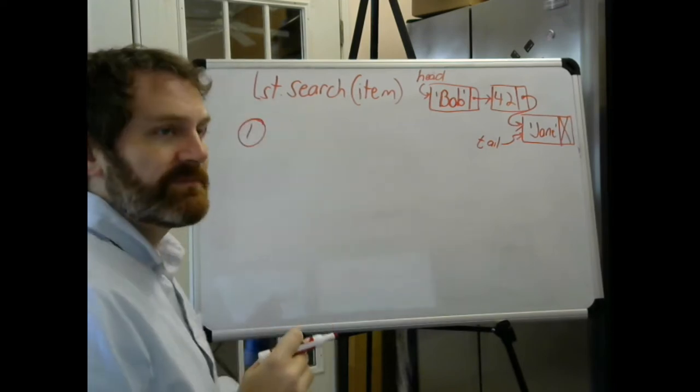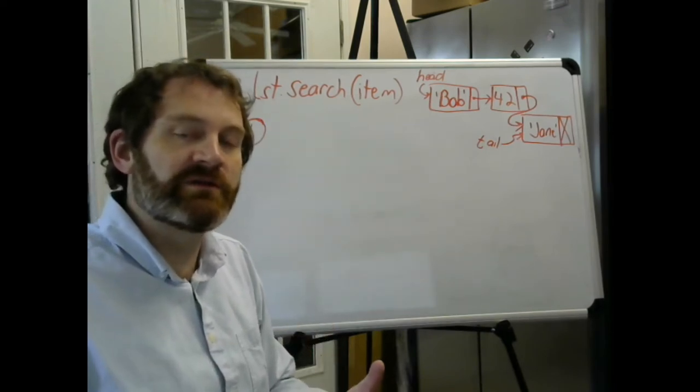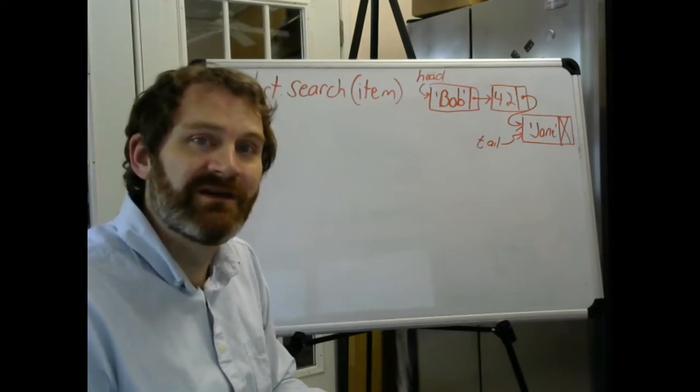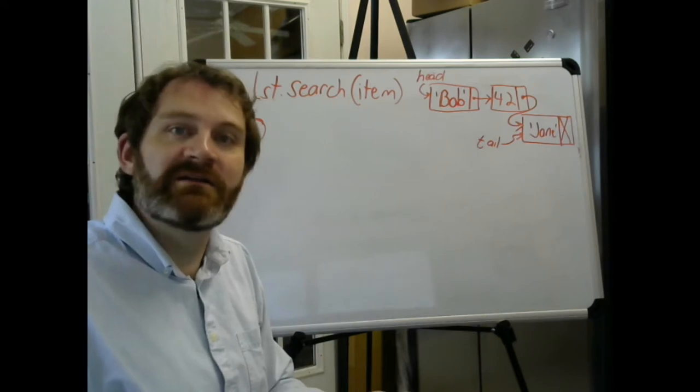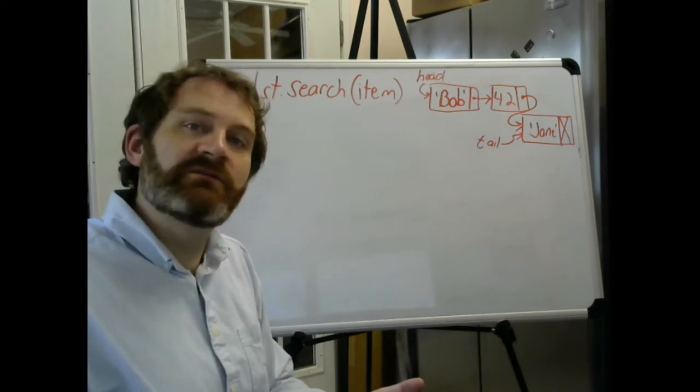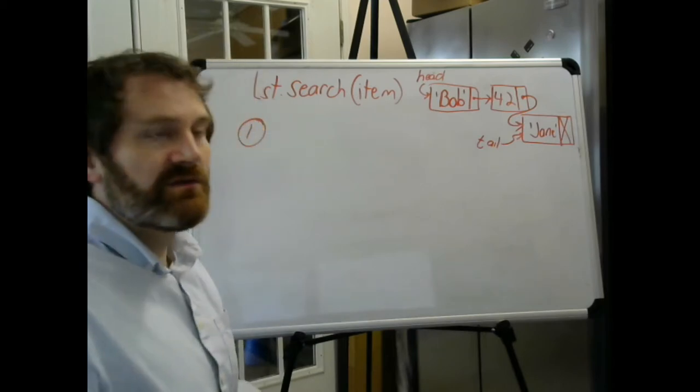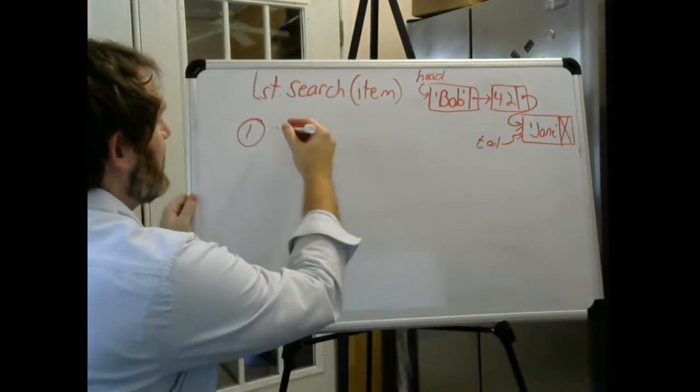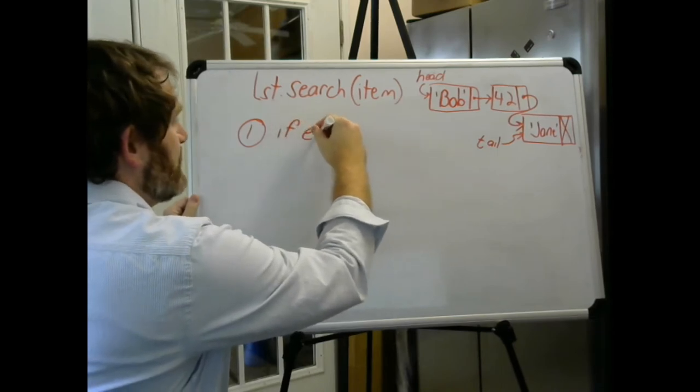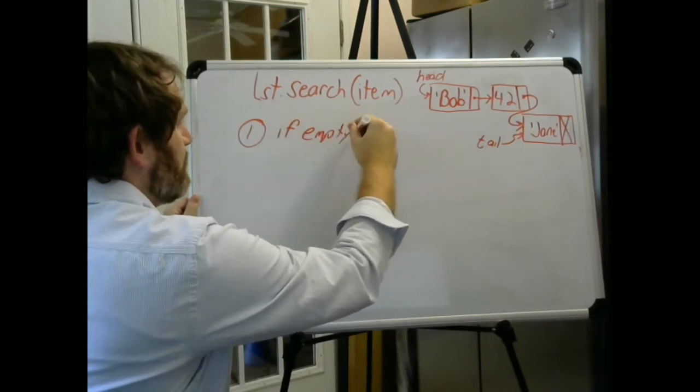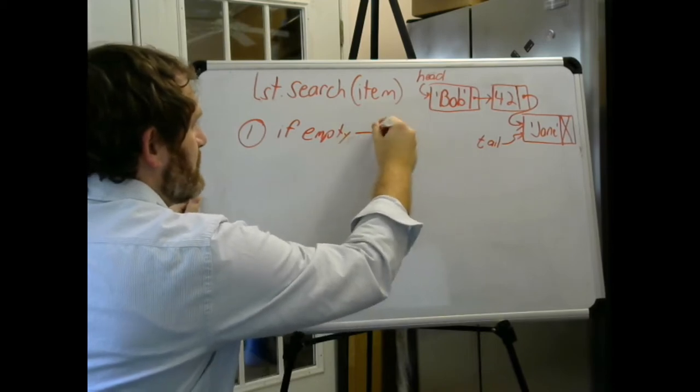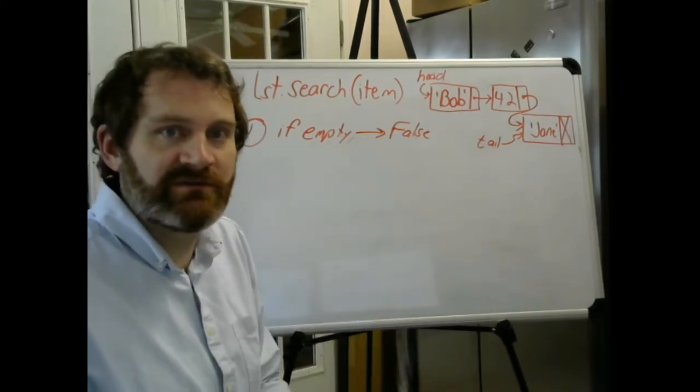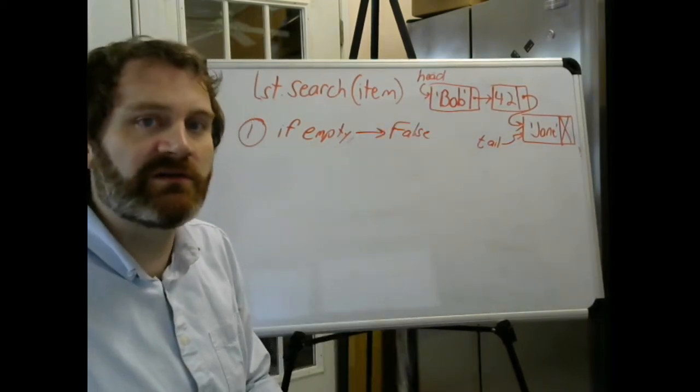Now let's think for a minute about our special cases. The special case is that you're trying to search an empty list. Well, if the list is empty, the thing you're looking for can't be in an empty list. The list is empty. So maybe we can just say if the list is empty, we return false right off the bat. We don't need to search. It's empty, it can't be there. Return false.